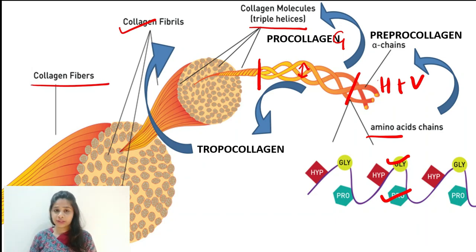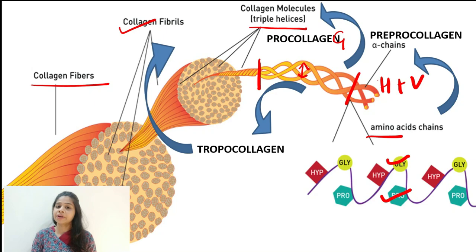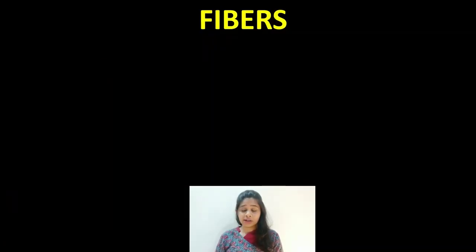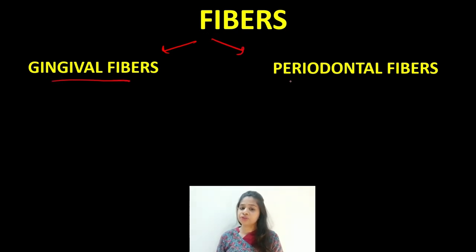So this is the whole process of collagen formation — the first few steps happen inside the cell whereas the last few steps happen in the extracellular space. For better understanding, we can classify these fibers into two groups: fibers present in the gingival tissue are called gingival fibers, and fibers present in the periodontal ligament space are called periodontal fibers.